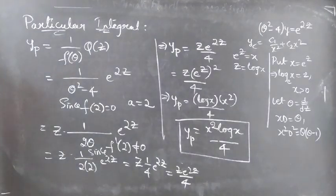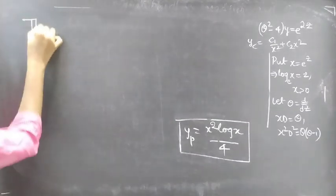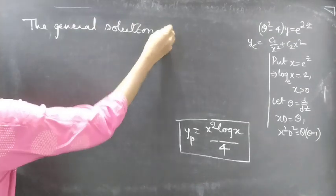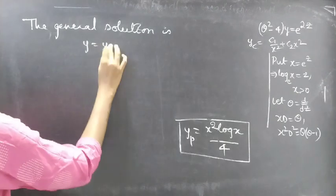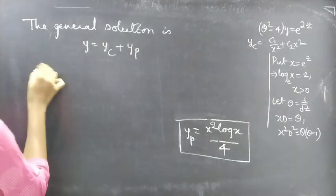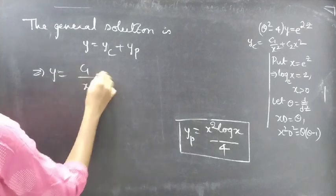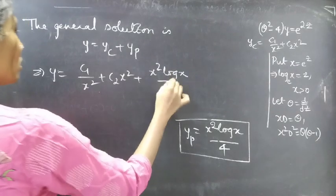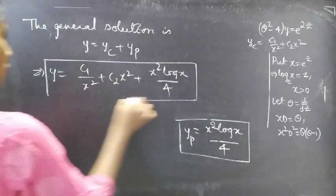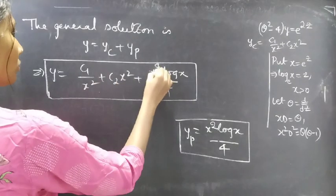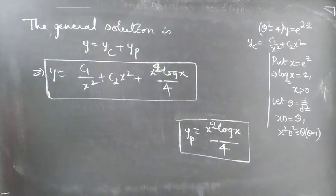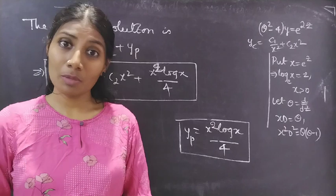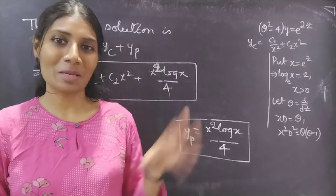We got yp and yc, so let's write the general solution. The general solution is y equals yc plus yp: y equals c1 by x squared plus c2 x squared plus x squared log x by 4. This is the required solution. We have seen a problem from higher order linear differential equations with variable coefficients. Hope you understand — see you in the next video. Bye-bye.